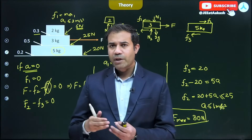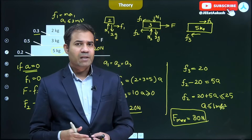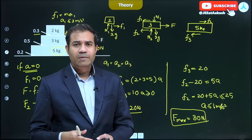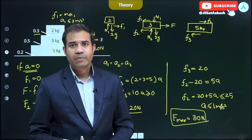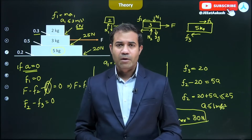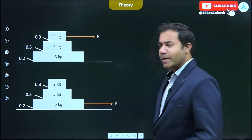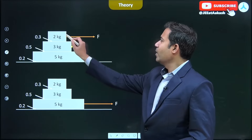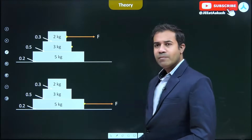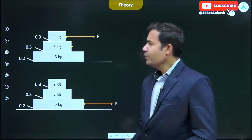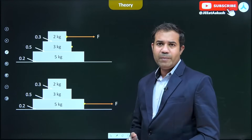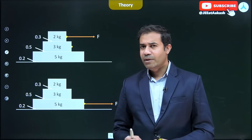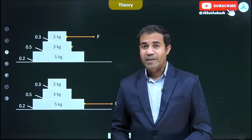In this way we follow simple steps to determine where exactly slipping might start and where the blocks will move together, building up the solution step by step. These are two examples on block-on-block problems. As a task for you at home, try the case where force F is applied on the 2 kg or 5 kg block instead, and find the upper and lower limits of force for no slipping at any contact. I hope the discussions in this class were thoroughly understood. All the best, keep practicing. Thank you.